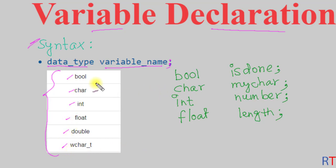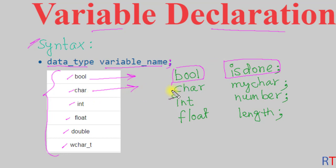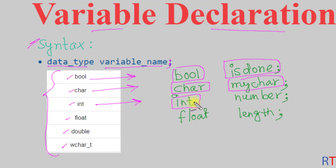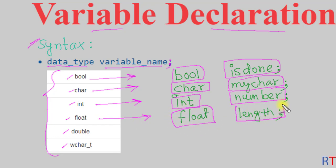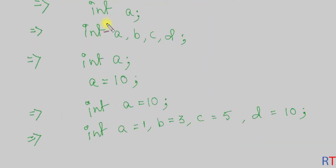To create one boolean variable, first we have the data type and then the name of the variable. Similarly, we can create one character variable: first we have the data type character and then the name of the variable. The integer variable can be created with the data type int followed by the name of the variable. Similarly, we can create the float variable with the float keyword followed by the name of the variable.